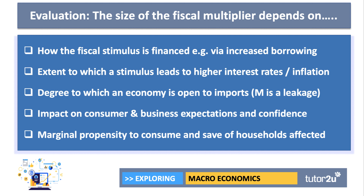A third factor is the degree to which an economy is open to imports. If we have a highly open economy and the government is spending more on housing or new bridges and hospitals, it could be the case that many of the component parts — the raw materials, perhaps the capital goods — may come in from overseas. It depends on the propensity to import. Imports are a leakage from the circular flow, so typically a highly open economy tends to have a lower fiscal multiplier because a large chunk of the stimulus spending tends to go on imports.